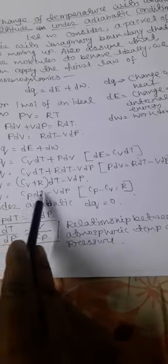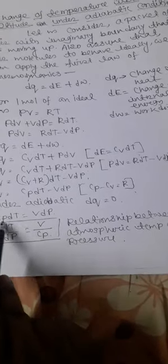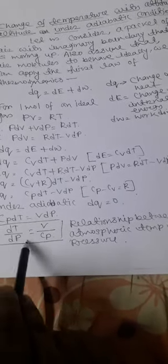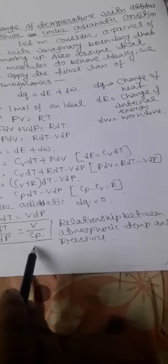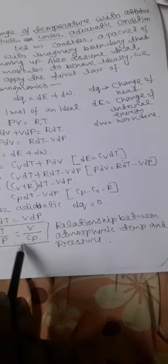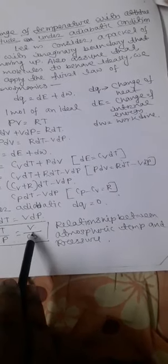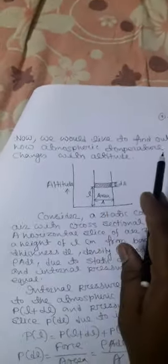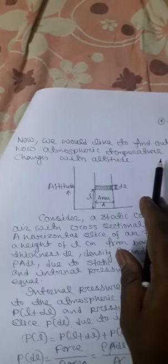Under adiabatic condition, dq equal to zero. So we can write Cp·dT equal to V·dp, giving dT/dp equal to V by Cp. This is the relationship between atmospheric temperature and pressure.